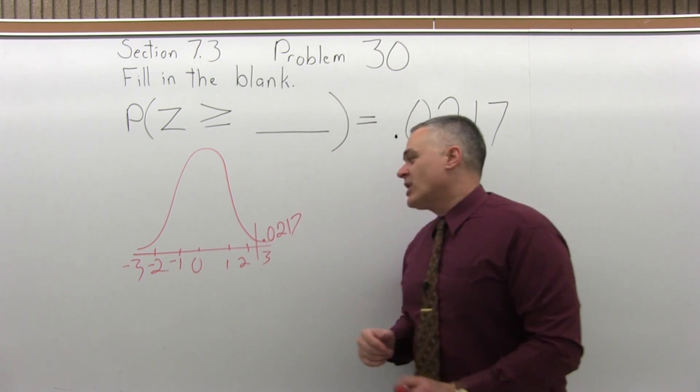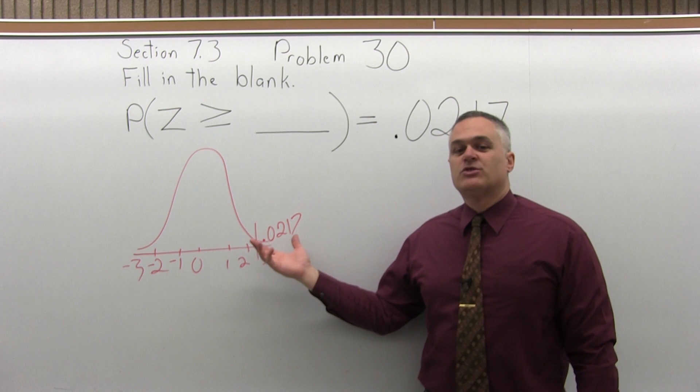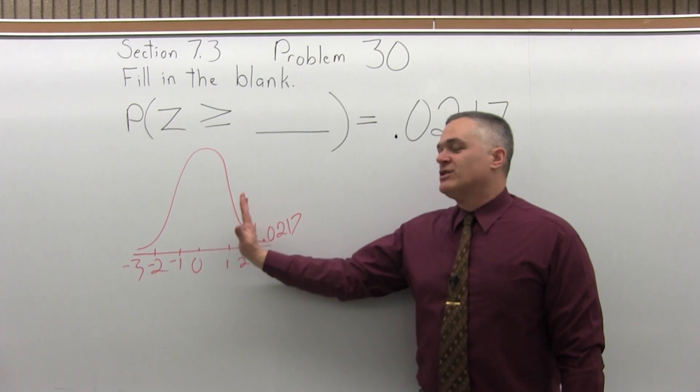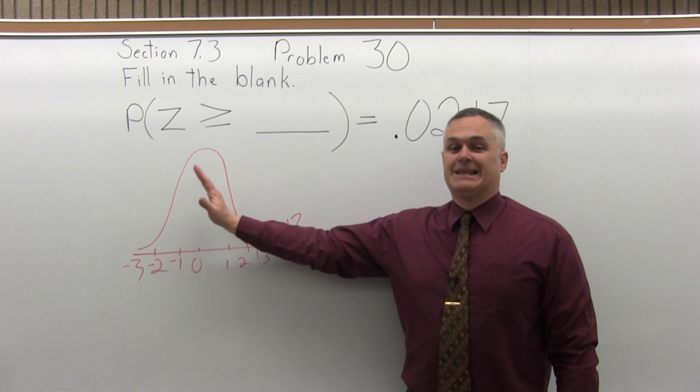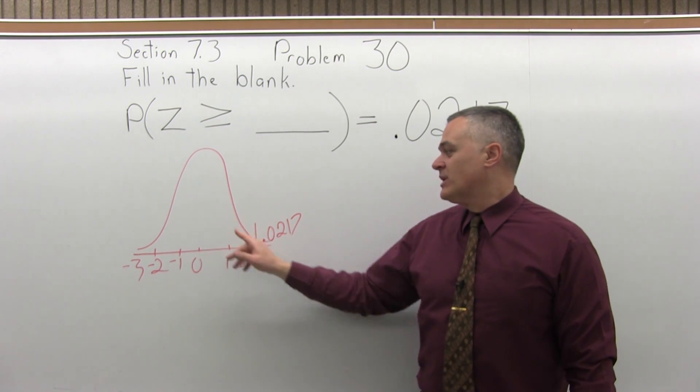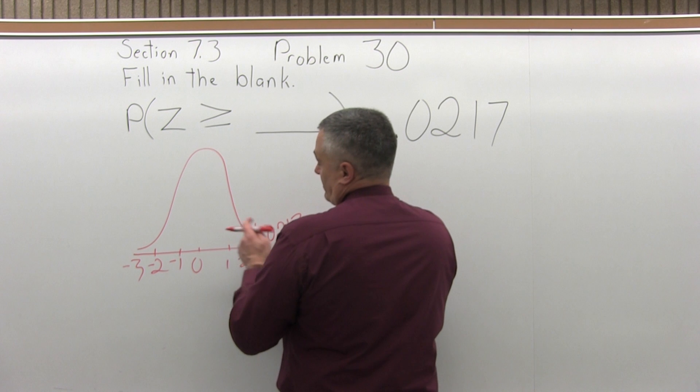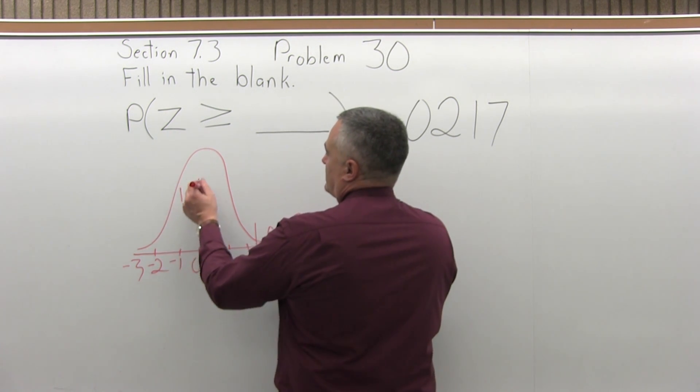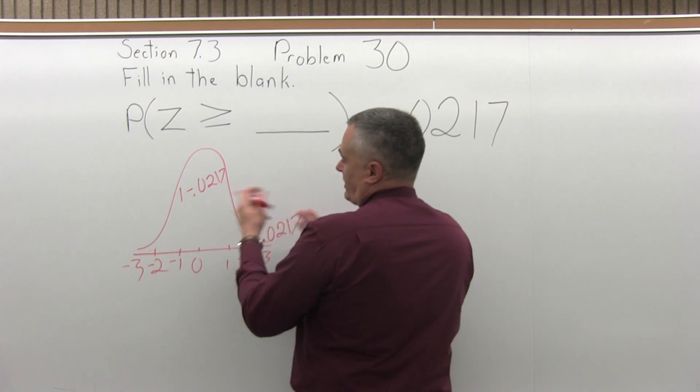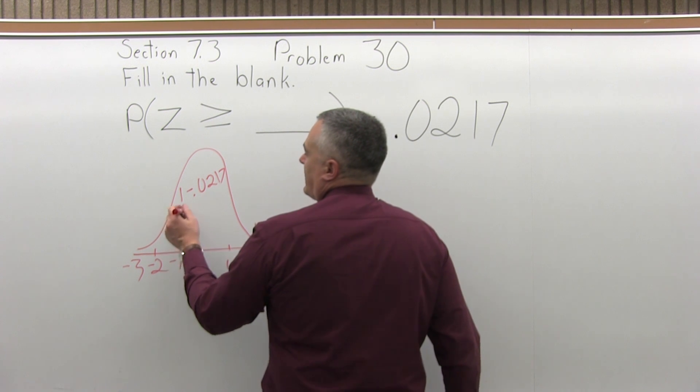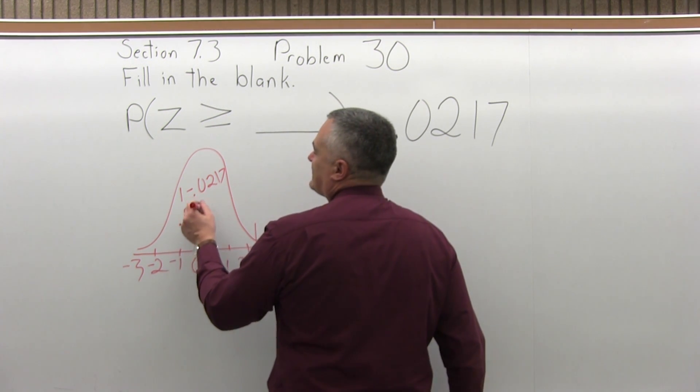Now the chart is not set up to tell me what's to the right of or what's bigger than what I look up. I need to know what's to the left of or what's less than what I look up. I can find that easily if I know the right side. I do 1 minus .0217, and I get .9783.